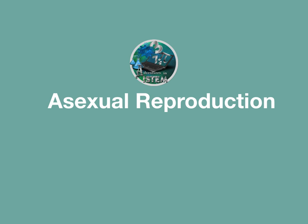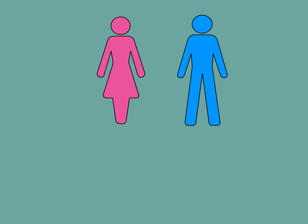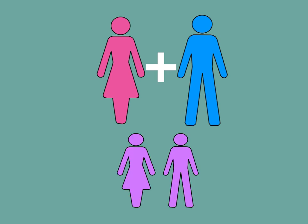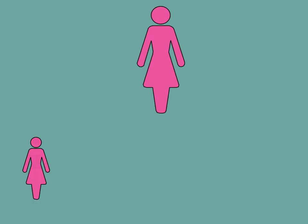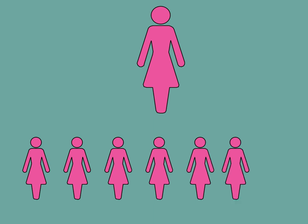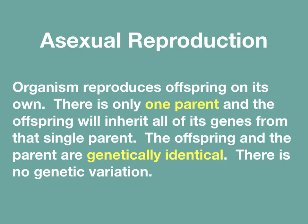Asexual reproduction. Most people think of reproduction as requiring a female and a male to create new offspring. However, there are times when only one parent is needed to produce more offspring. In asexual reproduction, an organism reproduces offspring on its own. There is only one parent and the offspring will inherit all of its genes from that single parent. The offspring and the parent are genetically identical. There is no genetic variation.